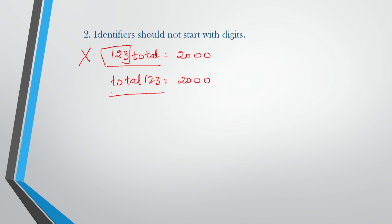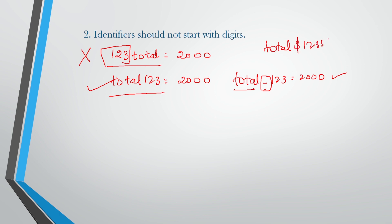If you start with an alphabet and continue with words, that is correct. 'total_123 = 2000' is also fine because it starts with 'total' followed by an underscore. However, 'total$123 = 2000' is a wrong identifier because you cannot use a dollar symbol or any other symbol except underscore.